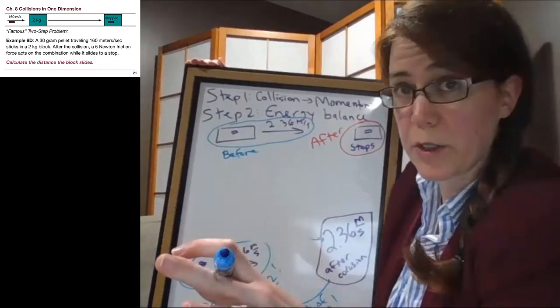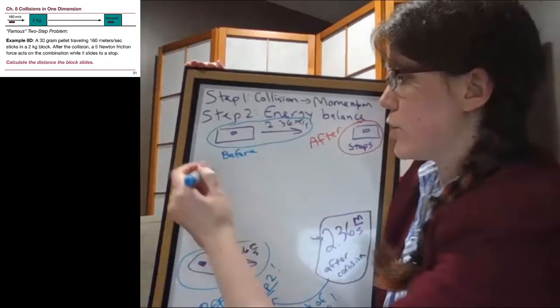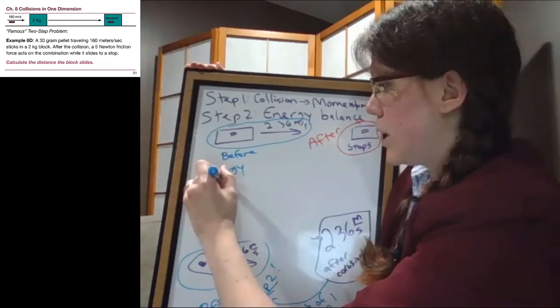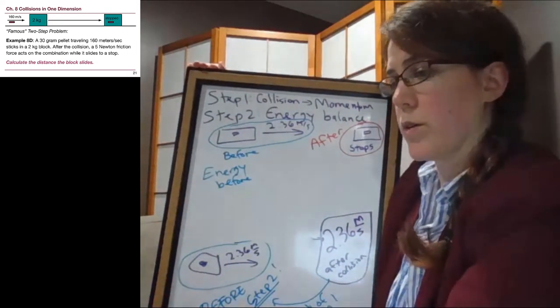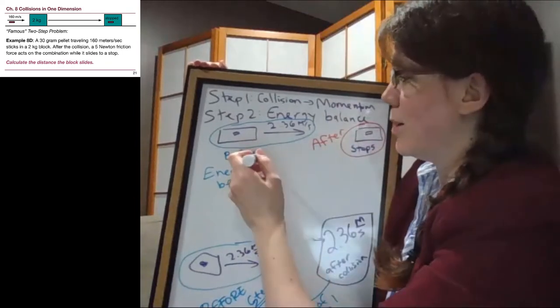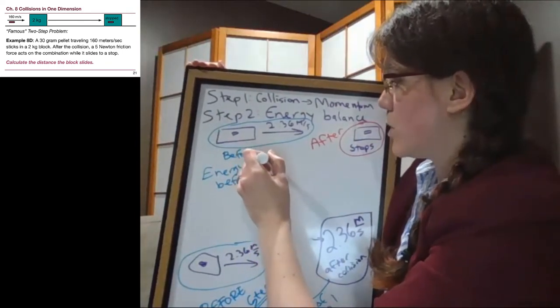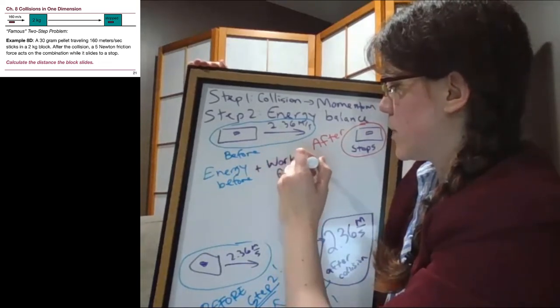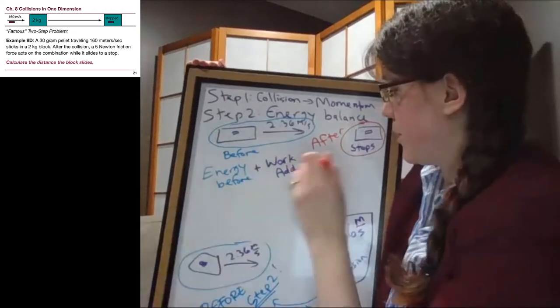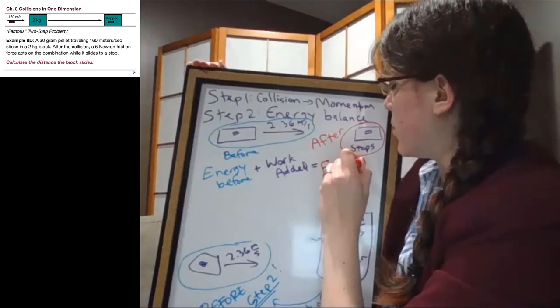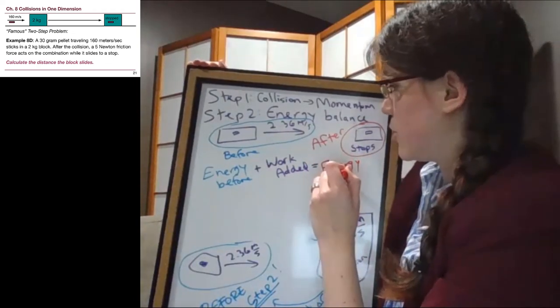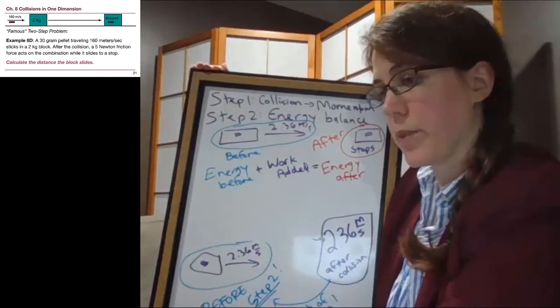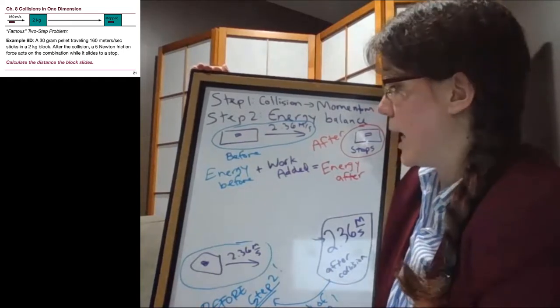Normally we do a full table of is there kinetic energy, is there potential energy from gravity, is there potential energy from springs, is there a work term. That's always worth thinking through, but one thing we can realize right away is there's no springs involved and there's no gravitational energy involved either. So we can write out our energy before plus work added equals energy after.